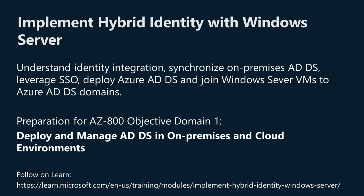G'day Windows Server Hybrid Administrators. Welcome to this Learn Training module. The title of this module is Implement Hybrid Identity with Windows Server. In this module, you'll learn about the following topics: Understanding Identity Integration, Synchronizing On-Premises Active Directory Domain Services, Leverage Single Sign-On, Deploy Azure ADDS, and Join Windows Server VMs to Azure ADDS domains. You can follow along with the contents of this module on Microsoft Learn at the address shown on the screen and listed in the video description.